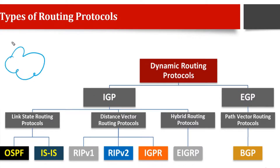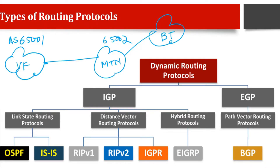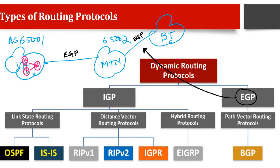For example, we have a network with autonomous system number 65001 — this might be Vodafone. Then we have another network, MTN, with autonomous system number 652. These different networks are connected using protocols called EGP, Exterior Gateway Protocol. Whenever we connect different autonomous systems together we need an exterior gateway protocol between them. When running protocols within a network to connect different routers and networking devices, we use IGP, Interior Gateway Protocol.